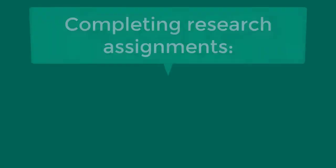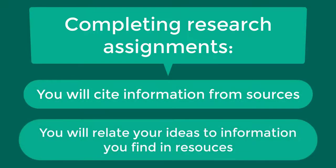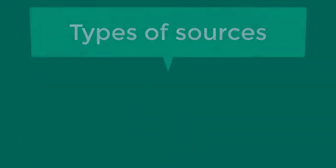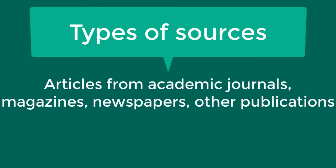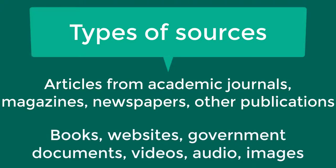When completing assignments such as a research paper or presentation, there are many different types of sources you may use to get information. You will need to show how your ideas relate to the ideas of others. Different types of sources include many kinds of articles, as well as books, websites, government documents, videos, audio, images, and more.